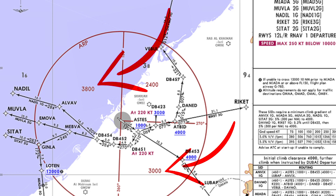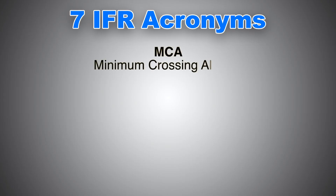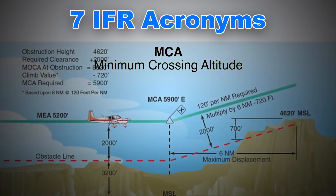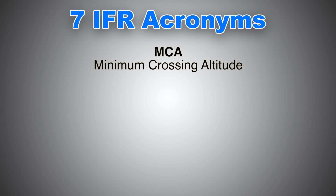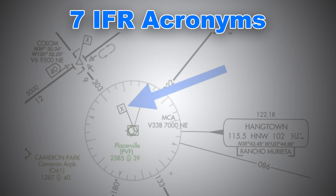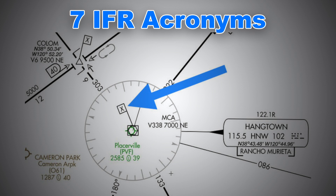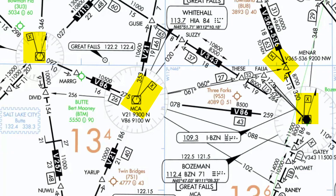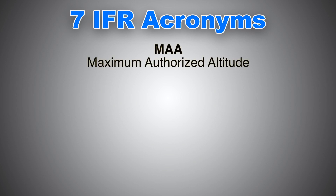Next we have MCA, or Minimum Crossing Altitude. An MCA is the lowest altitude at certain fixes at which the aircraft must cross when proceeding in the direction of a higher minimum en route IFR altitude. Minimum crossing altitudes are shown using a flag with an X in the middle and the text MCA. The minimum crossing altitude is the minimum altitude at which you can cross a fix, and it is usually associated with a change in the MEA at that fix.